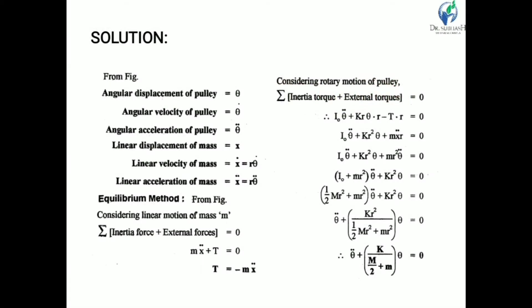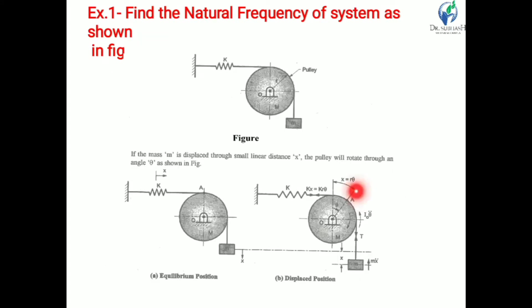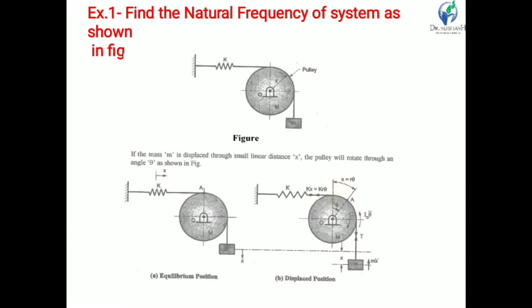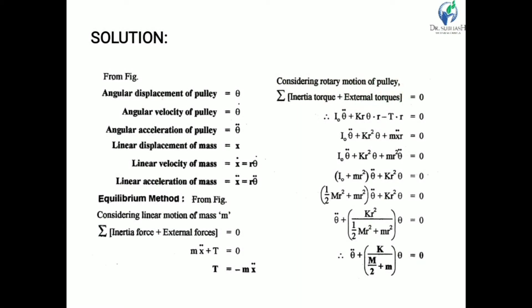Now considering rotary motion of pulley — according to D'Alembert's principle, the summation of inertia torque plus external torque equals zero. The inertia torque acts opposite to the direction of motion. Since the pulley rotates clockwise, inertia torque acts anticlockwise. So the inertia torque is I_O·theta-double-dot.